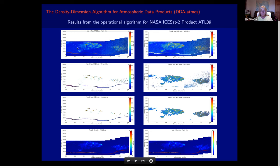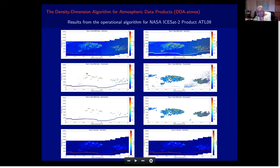First, here's the atmospheric data product. On the left we have raw photons going up to 14 kilometers above the earth — the bottom is the earth's surface and you see a lot of background noise on the right and less on the left. The DDA algorithm first creates a density field, then creates a threshold function that is auto-adaptive to background and signal density and to apparent surface reflectance, which affects the satellite signal.